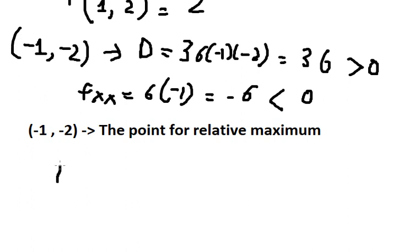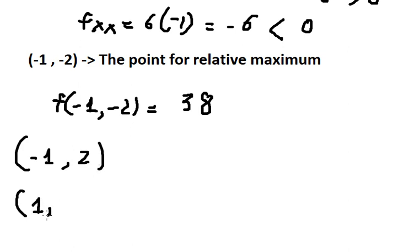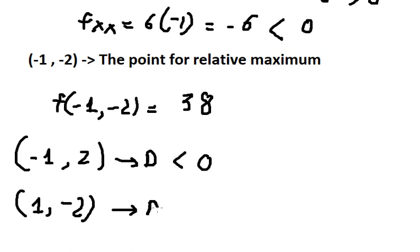We put (-1, -2) back into the function and get 38. Now for the remaining points (-1, 2) and (1, -2): plugging them into D gives a negative value. Since D is negative, these are saddle points.